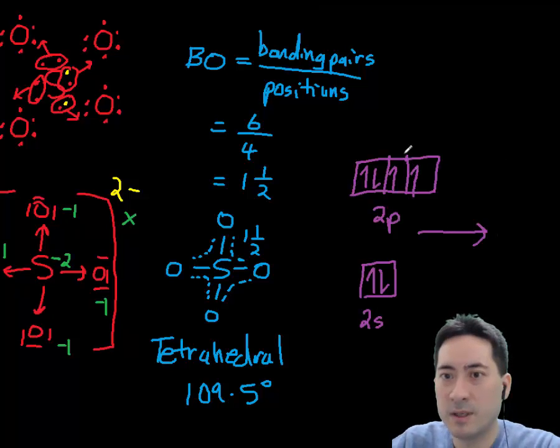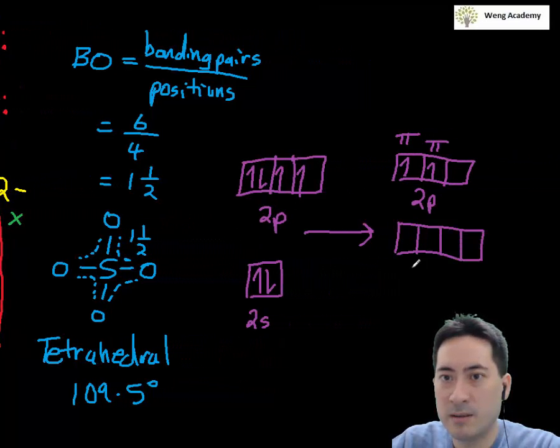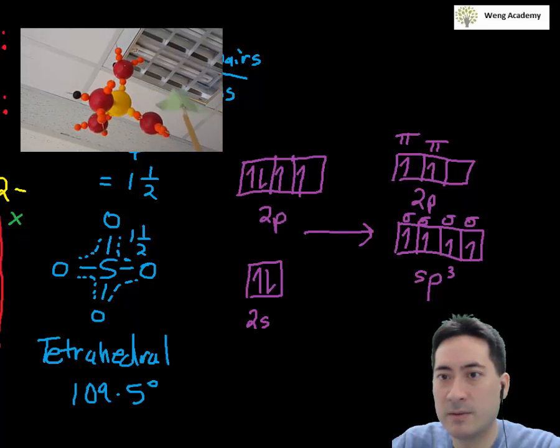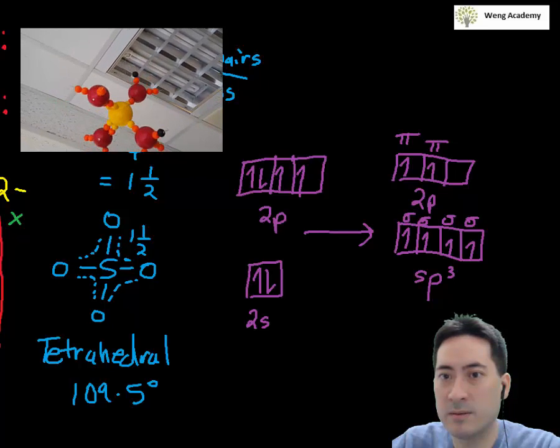So we know the sulfur needs two pis, two ps to form pis and the rest of sigmas. So we need to hybridize, get four hybridized there. So sp3s. And we get, leaving the two pis as they are, so we can get the final structure for the hybridized orbitals.